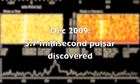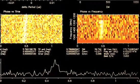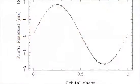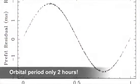In 2009 a 5.7 millisecond pulsar was discovered on our supercomputers and our colleagues at Jodrell Bank soon realized that this star was orbiting another object every two hours.